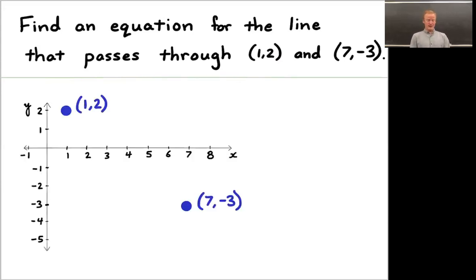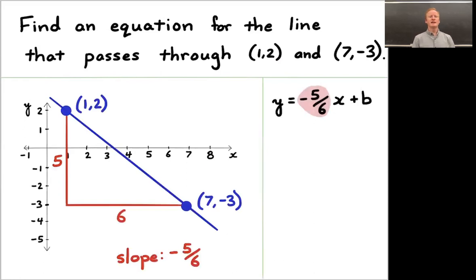Welcome back. I've drawn an x-axis, a y-axis, and the two points of interest, 1, 2, and 7, -3. We want to find the equation for the line that passes through those two points. One way is you can start by finding the slope of this line. To go from 1, 2 to 7, -3 means dropping 5 and moving over 6. Because you've dropped 5 and moved over 6, that means the slope of this line is -5/6. I could use what's called slope-intercept form to begin to write down the equation for this line. Y equals the slope -5/6 times x plus b.